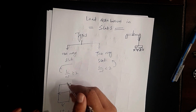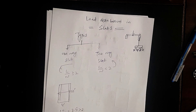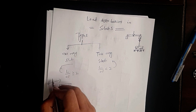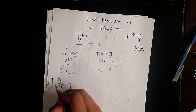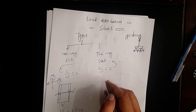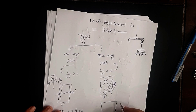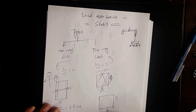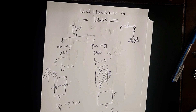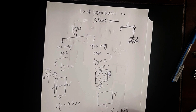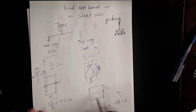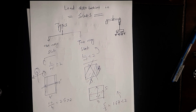In a one-way slab, the load is distributed in one direction — either in the X direction or in the Y direction. For a two-way slab, where the length-to-width ratio is less than 2 — for example, length 5 and width 3 gives 1.67, which is less than 2 — the load distribution occurs in two directions: both in the X direction and the Y direction.